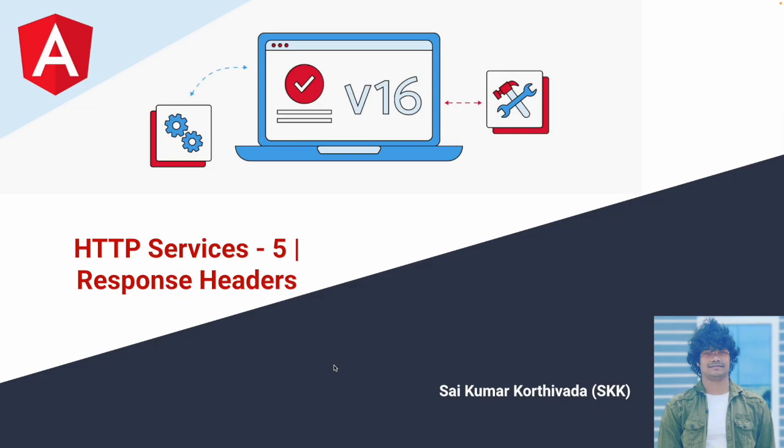For a real-time example, whenever you download an Excel file, you will be getting the complete file in your data response. But to keep a name for that file from the back-end, that particular property is inserted in our response headers and we have to capture that file name before downloading, then we can create the file with that particular name. This is a real-time scenario we can see in some of our applications.